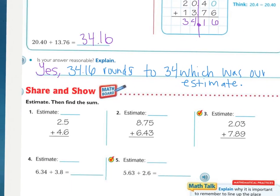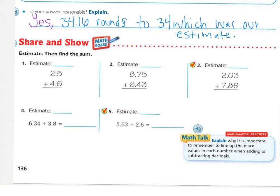We're now going to move on to the Share and Show. Before you press pause to get started, I want to remind you that they do want an estimate, so you need to round these generally to the whole number. If they don't tell you specifically to round to a decimal place, generally just round to the nearest whole number. I need to see an estimate and then I need to see your actual. In problems 4 and 5, you need to make sure that you line up your decimals, and if you need to add a zero you may do that to help you keep aligned. Go ahead and press pause while you work through the Share and Show. When you are finished, press play to check your answers.